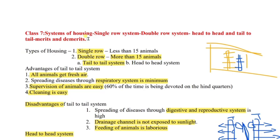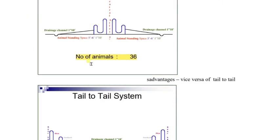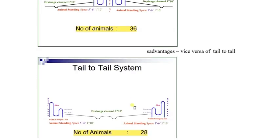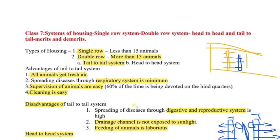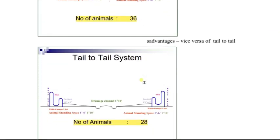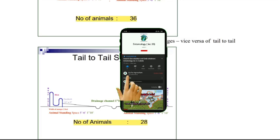So guys, this is the systems of housing. The systems are single row and double row. Single row has all animals in one row; double row has two types — tail-to-tail and head-to-head. This is it for today's lecture on systems of housing. Thank you for watching. If you have any queries, ask us on our Instagram page or post in the comment section. You can also download this PPT from our Telegram channel Go for Village. Thank you, take care, bye.